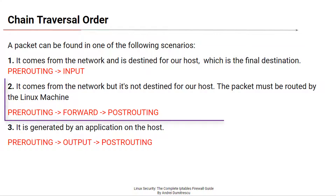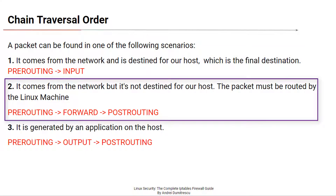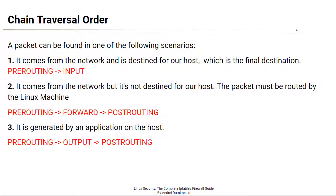The second scenario is when the packet comes from the network but it's not destined for our host — our host is not the final destination. The packet must be routed or forwarded by the Linux machine, which acts as a router. In this case, the packet traverses the pre-routing, forward, and then the post-routing chains.